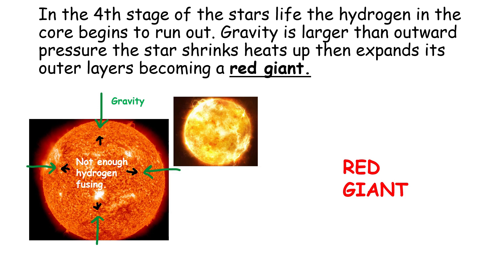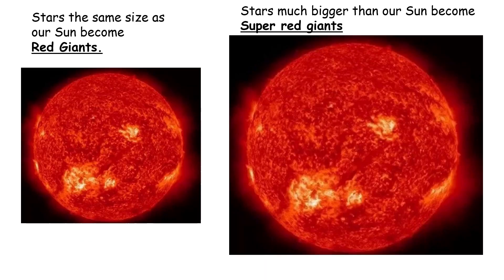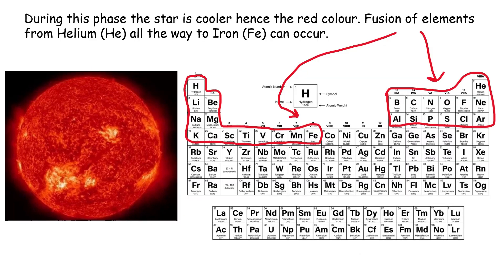In this fourth stage is where we get the divergence between stars the same size as our sun and supermassive stars. Stars the same size as our sun become red giants, and stars much bigger than our sun become super-red giants. During this phase the star is cooler, hence its red colour, which is of a lower frequency than blue or violet. The star has run out of hydrogen and so is forced to fuse helium. It can fuse elements all the way to iron, and the elements circled in red are the elements stars can form in the red giant phase.